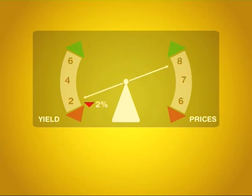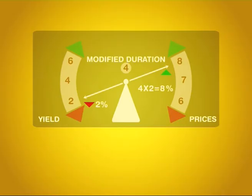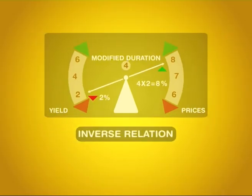If yields drop by 2% and the modified duration is 4, then bond prices will generally rise by 4 × 2 = 8%, owing to the inverse relationship between yields and bond prices.